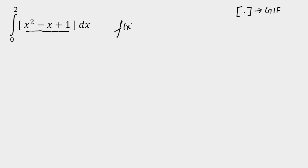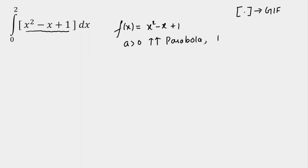First, let's find out the function x squared minus x plus 1 and draw its graph. The coefficient of x squared is positive, meaning it's an upward parabola. If we check the discriminant, d is less than 0 — that is minus 3 — which means there are no real roots.